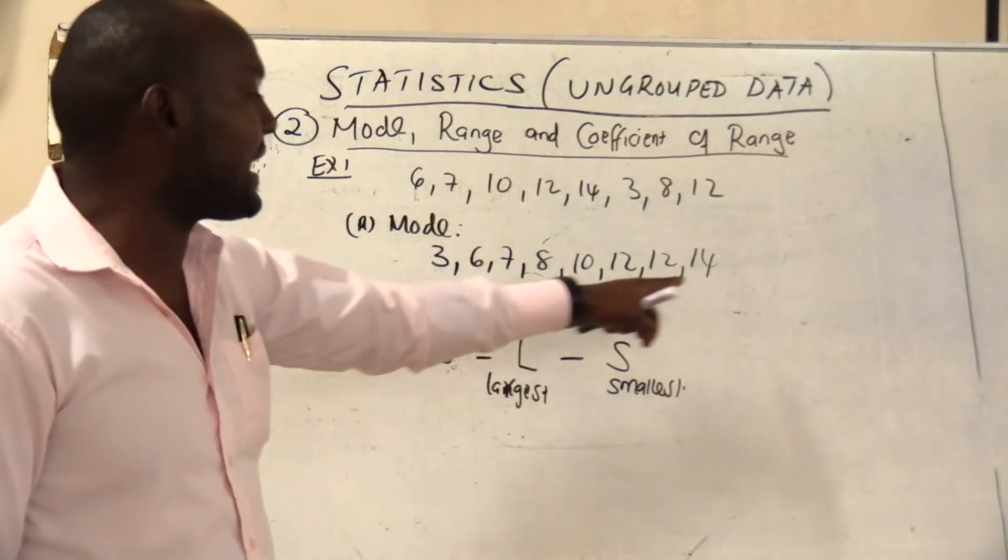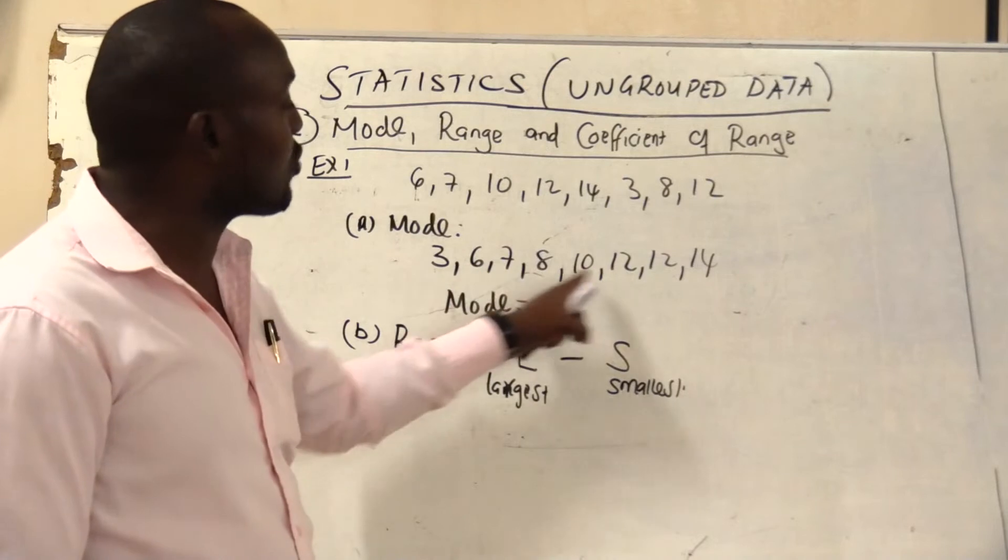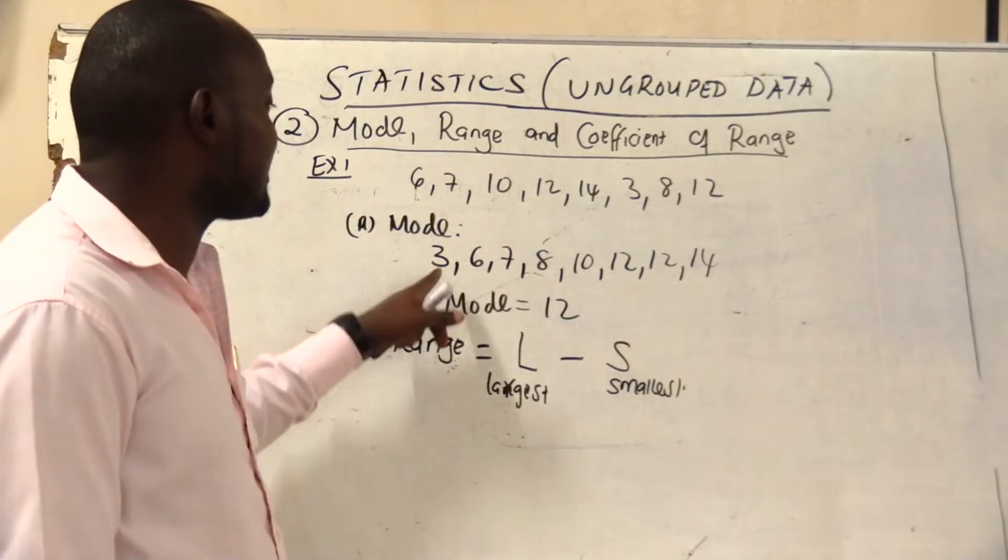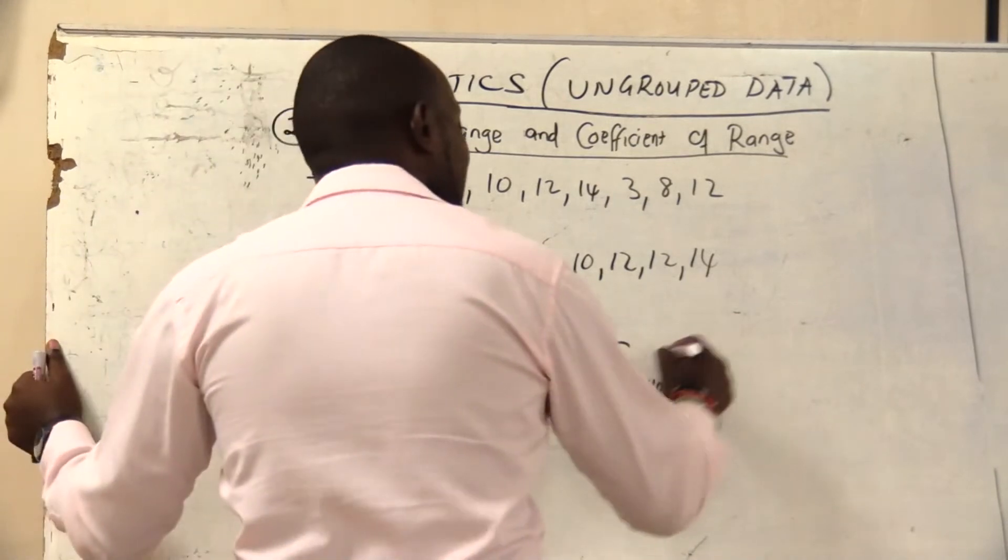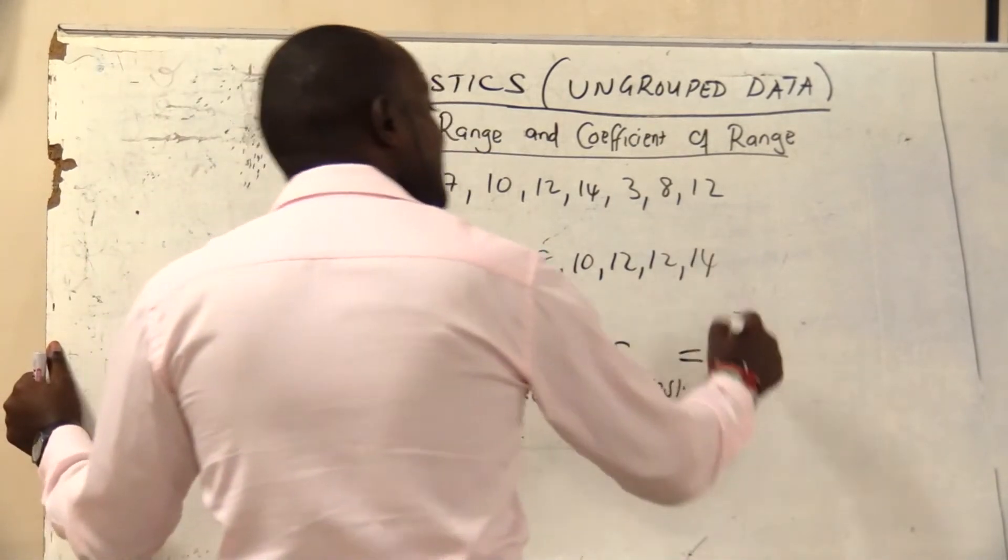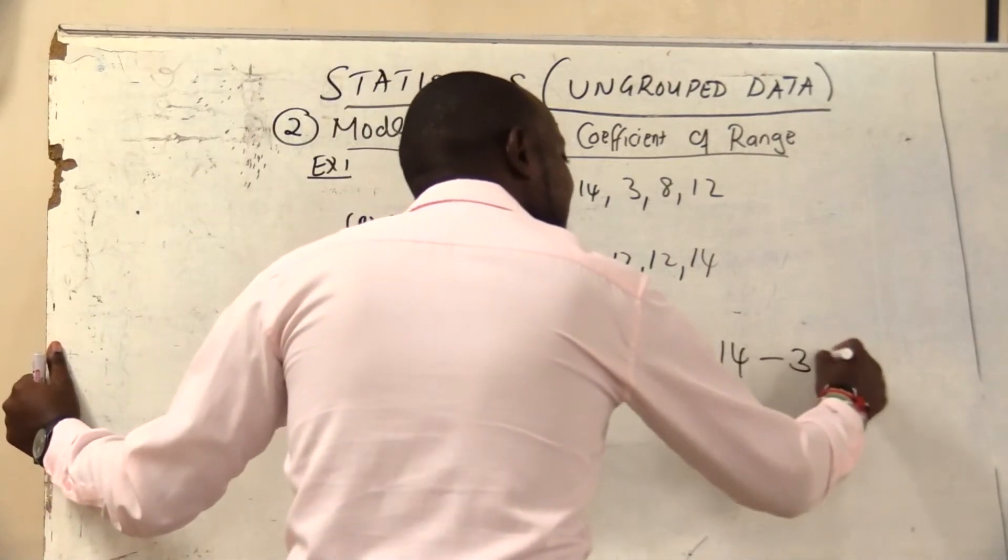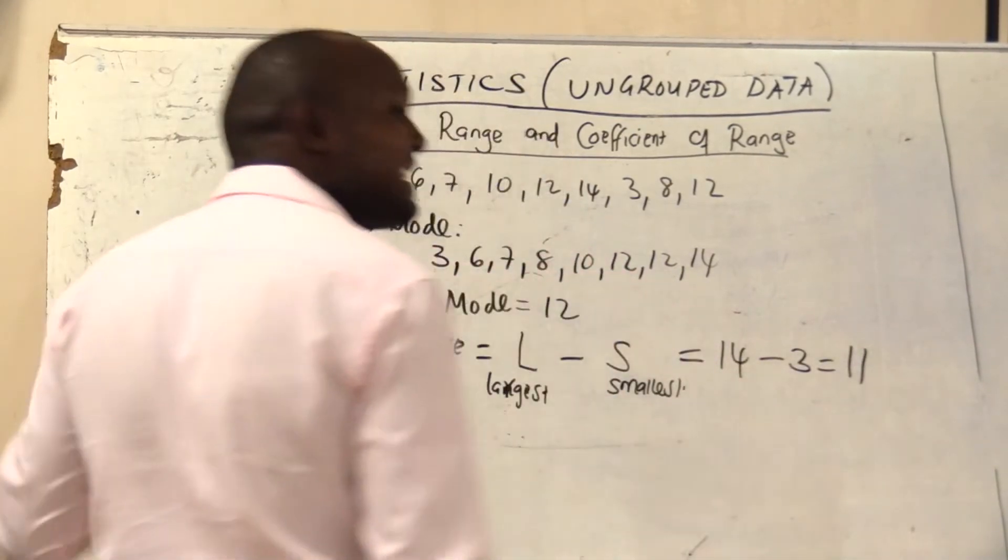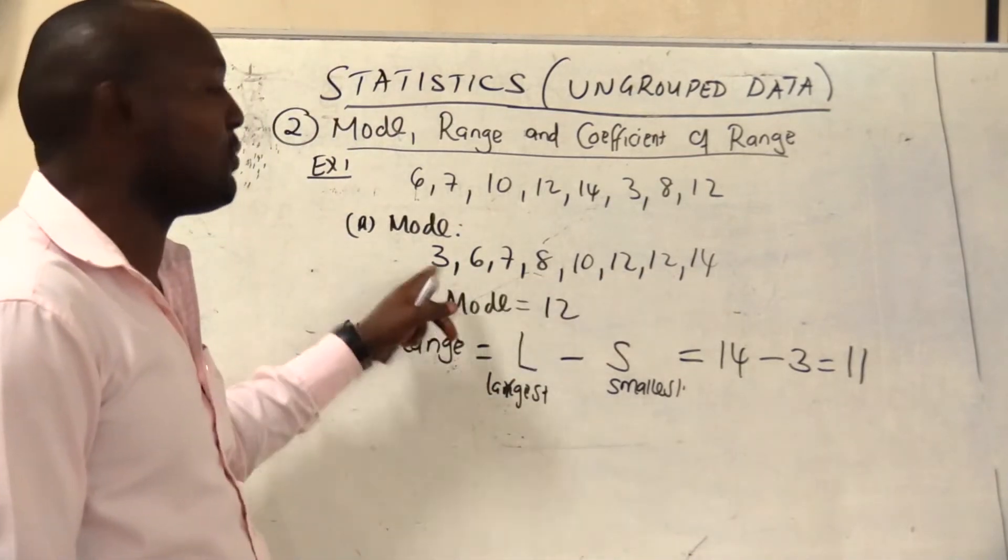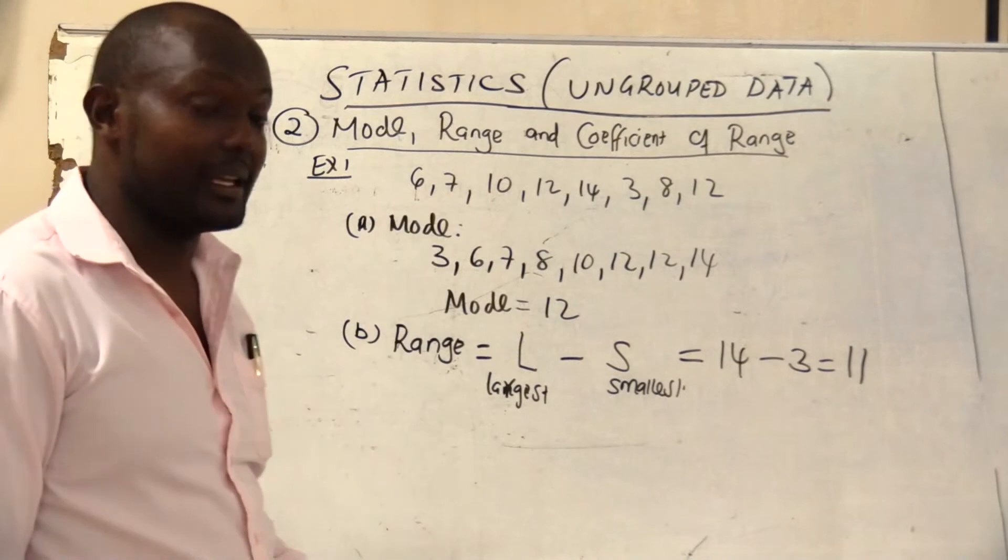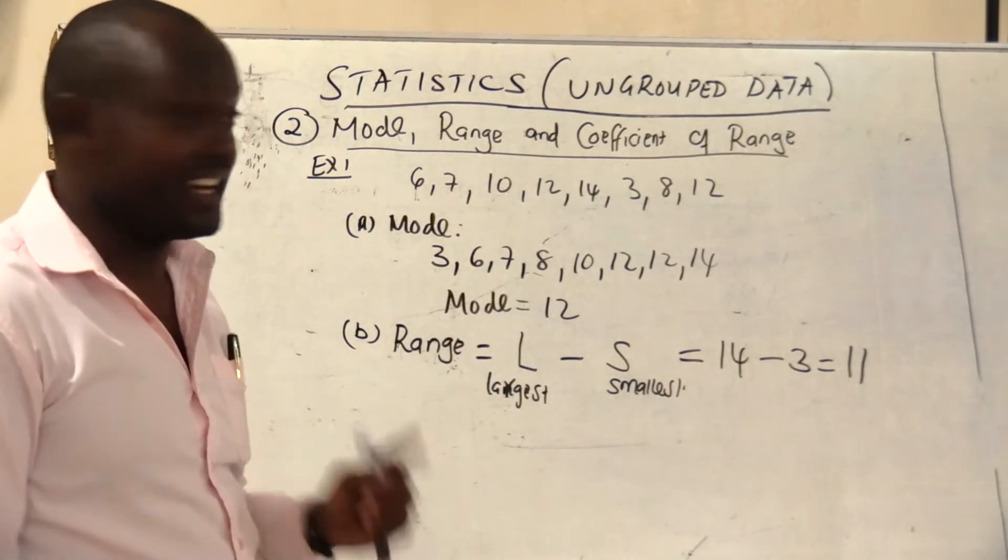So what is my largest value? That's why the first thing I did was to arrange my data so that you can see the smallest value and the largest value. So in this case my largest value is 14 and my smallest value is 3. So my range is 11. 14 minus 3 equals 11. That's how we calculate the range.